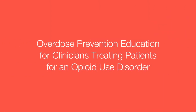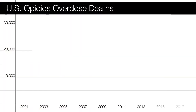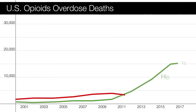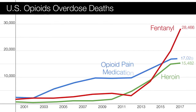This video discusses overdose prevention for clinicians treating patients for an opioid use disorder. The opioid overdose death rate in the United States has more than doubled over the last decade, driven mainly by illicit drugs like heroin and fentanyl, and the increased use and misuse of prescription opioids.